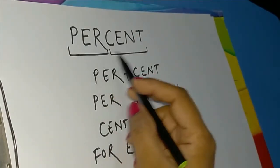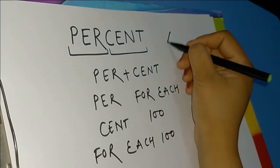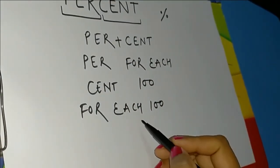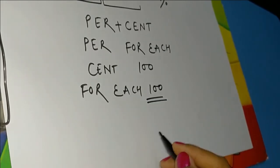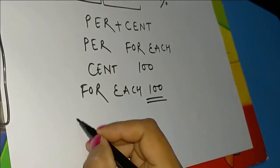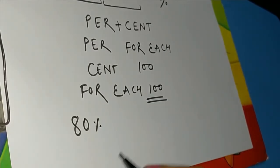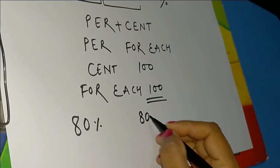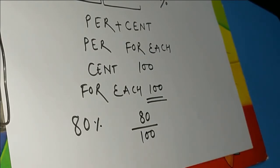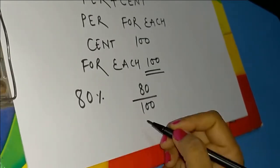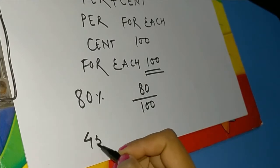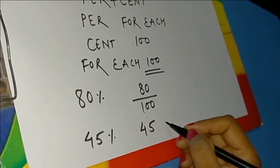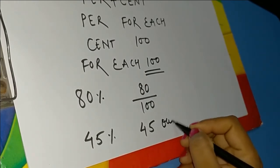The combined meaning is 'for each hundred.' Whenever we talk about percent, which is represented by the % symbol, we are dealing with hundred. For example, when we say 80 percent, it means we are talking about 80 out of 100. Similarly, 45 percent means 45 out of 100.